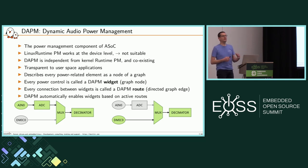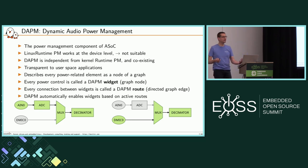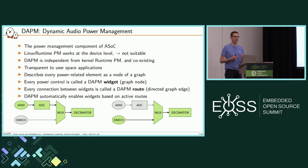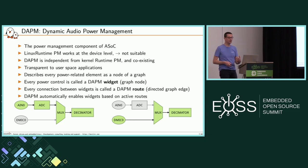DAPM is an independent power management mechanism that can coexist with runtime PM. It is totally transparent to user space — you don't control DAPM from user space; it just works automatically when you enable and disable features and change your routing. Every element in DAPM is described as a big connected graph. Each item in the graph is called a widget and represents an item in the hardware that can be enabled or disabled. Each connection between two widgets is called a route. DAPM automatically enables the components that are on the active routes.